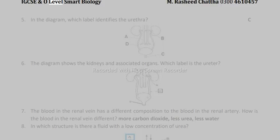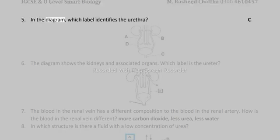IGCSE and O-Level Smart Biology. Rashid Chadha 03004610457. 5. In the diagram, which label identifies the urethra? C.